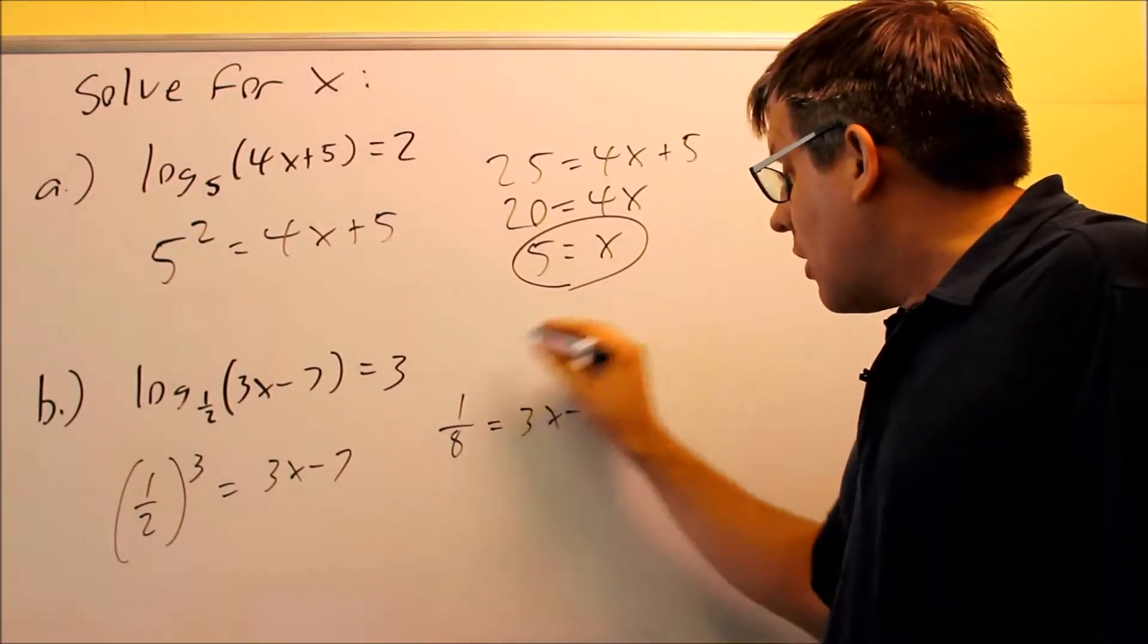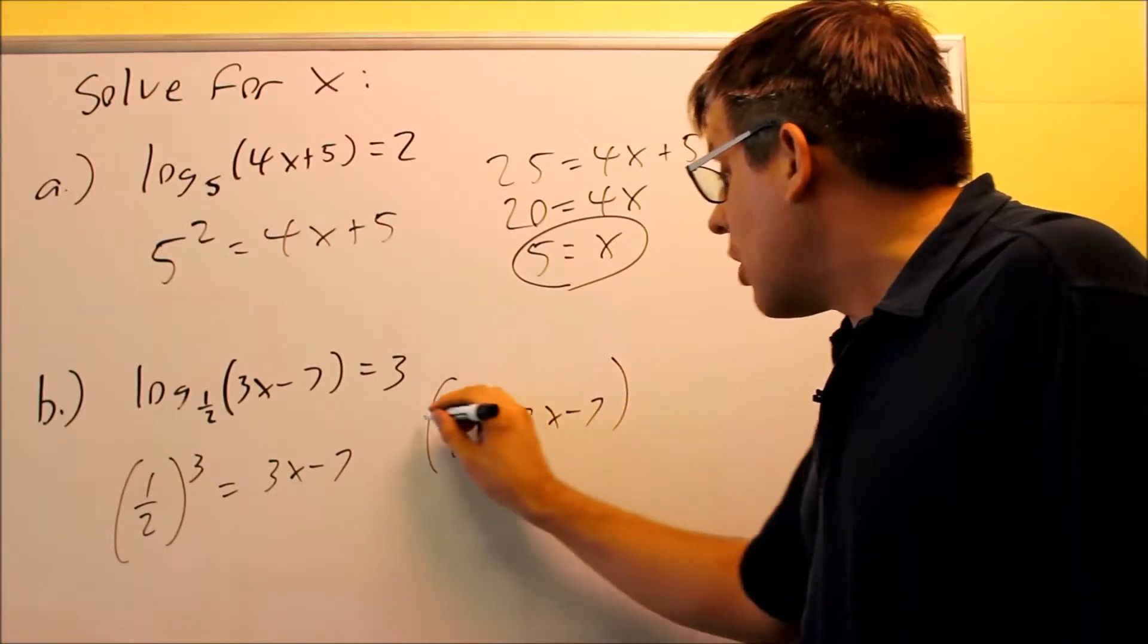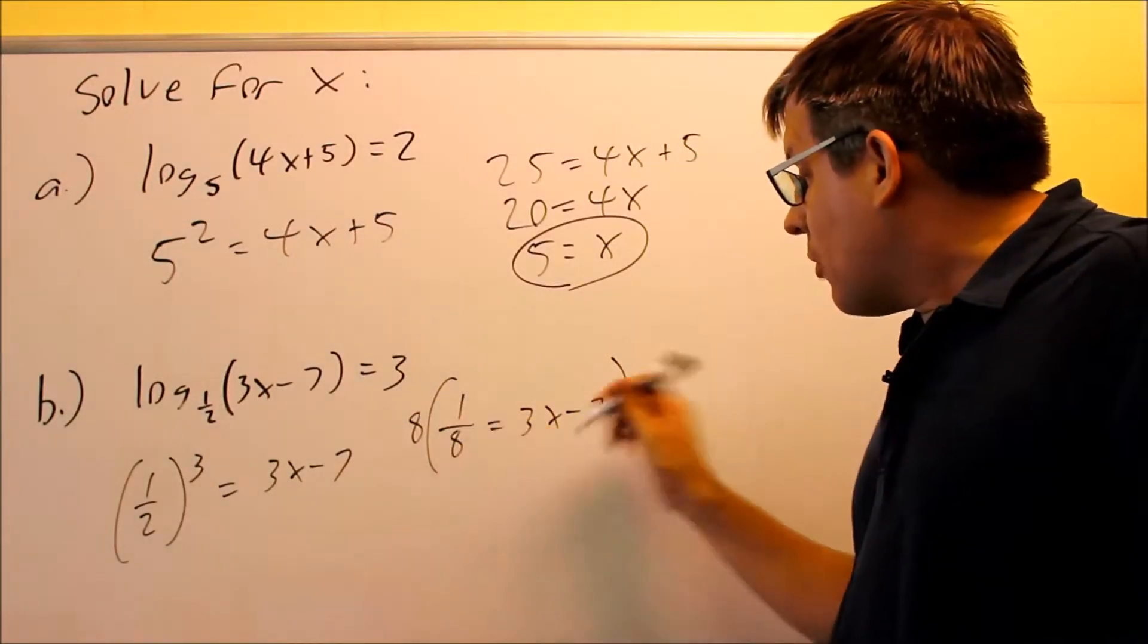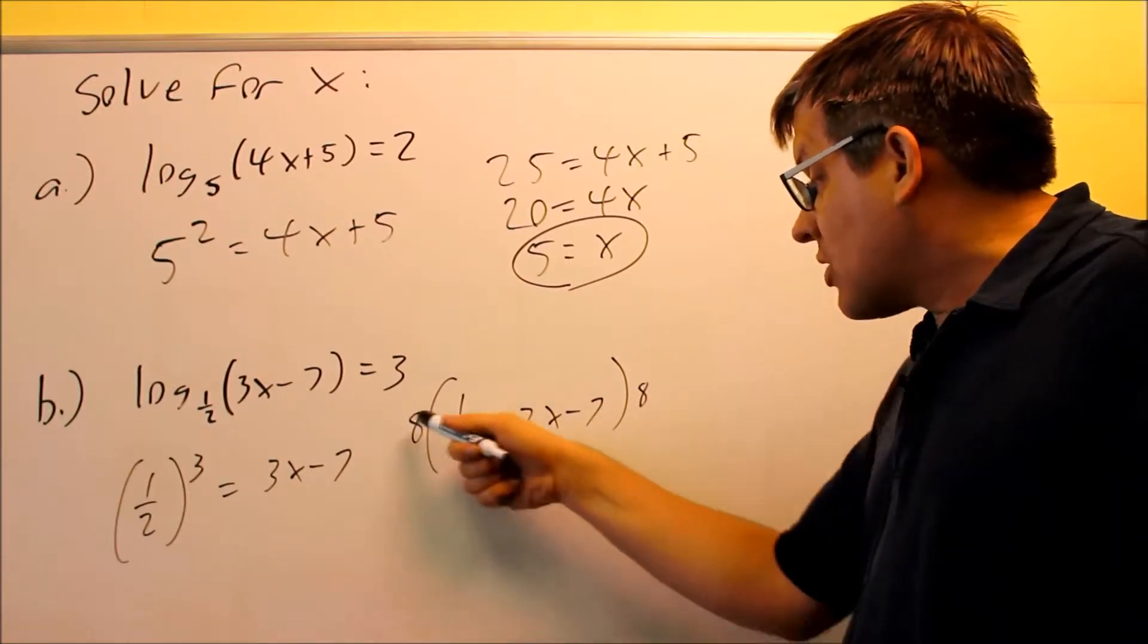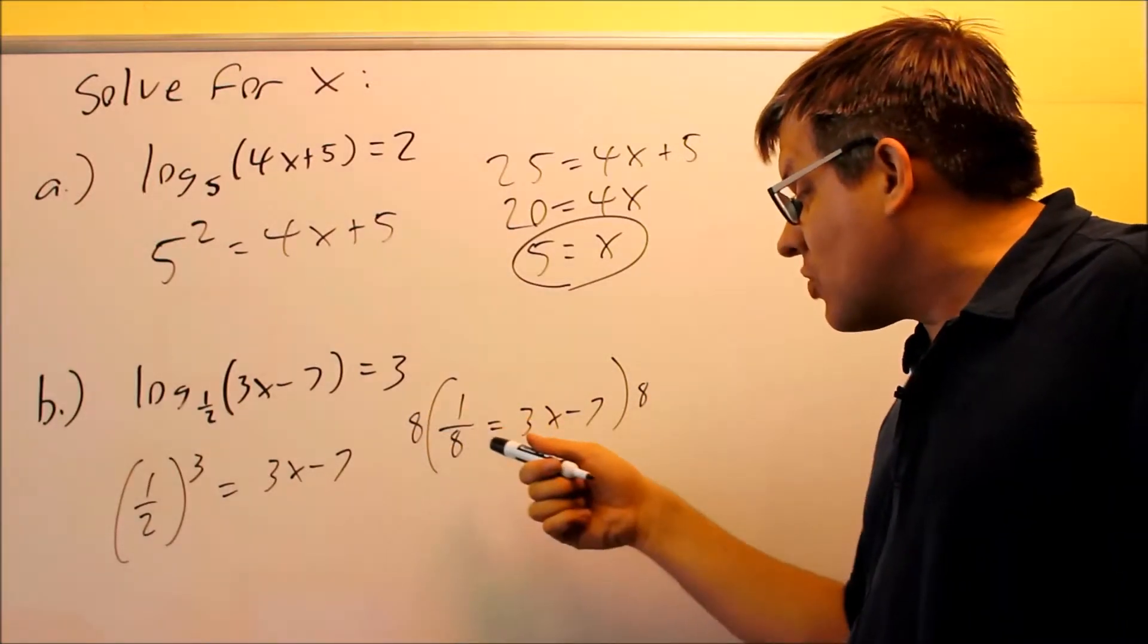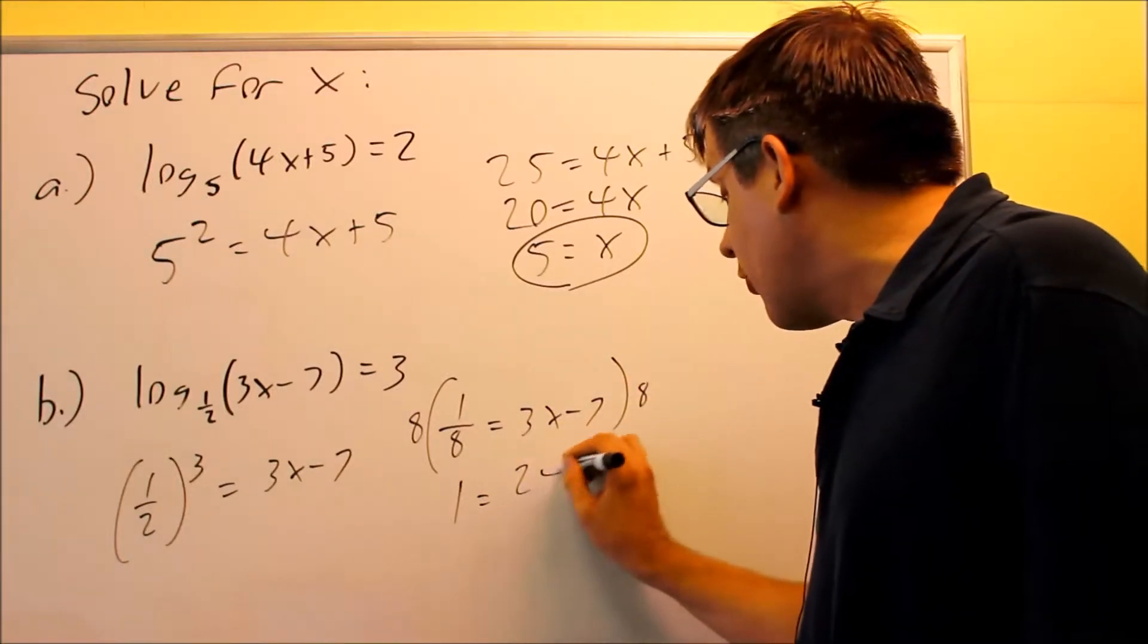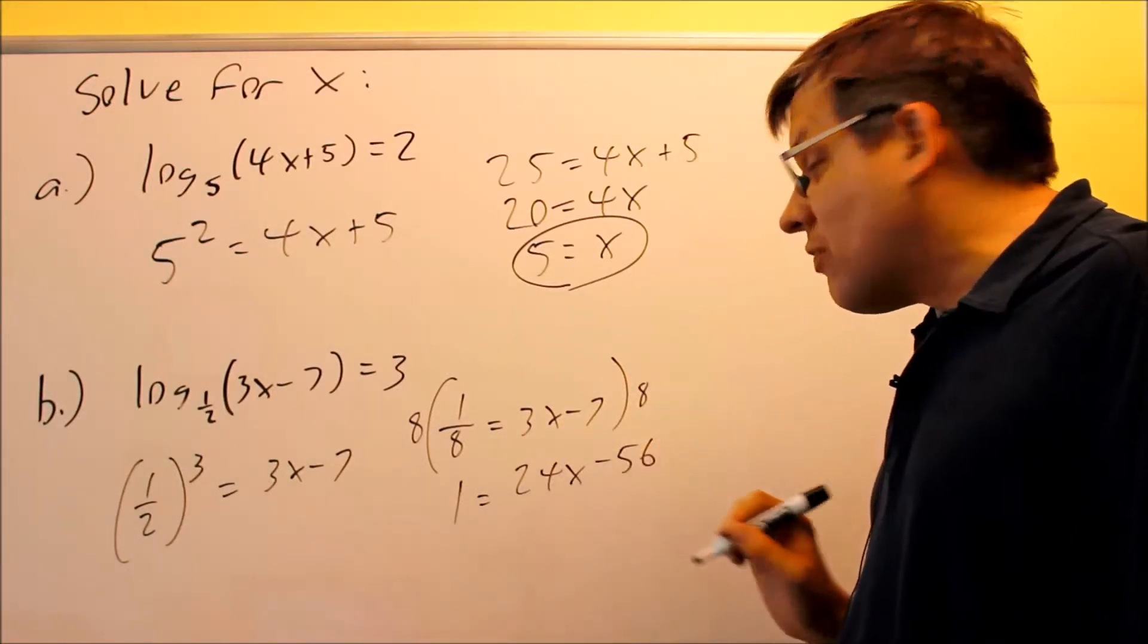If we've got a problem with a fraction here, the best way to do that is multiply by the LCD, least common denominator. And if you multiply both sides by that, that would cancel this fraction out. So I have 8 times 1 over 8, that's 1. Don't forget to multiply this side by 8 also. You get 24x minus 56.